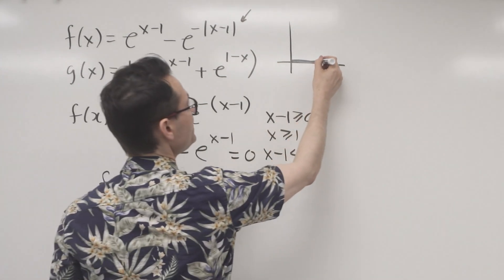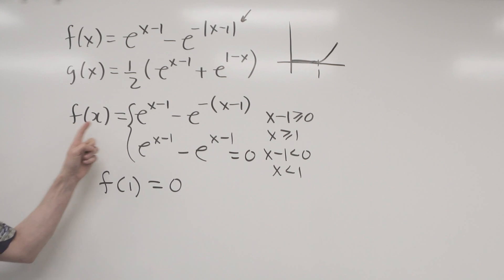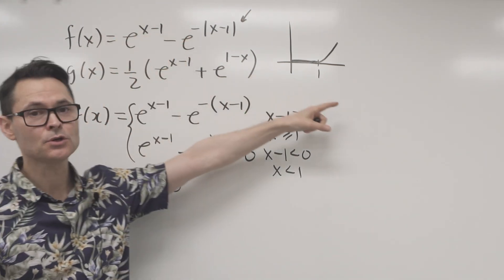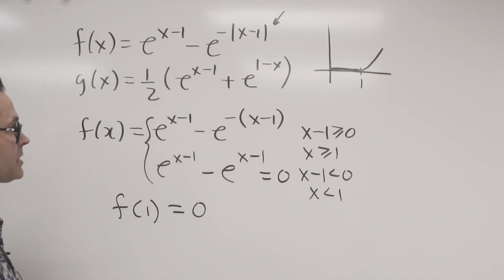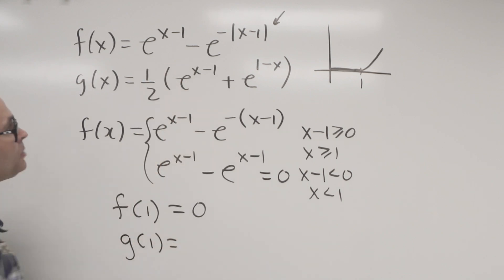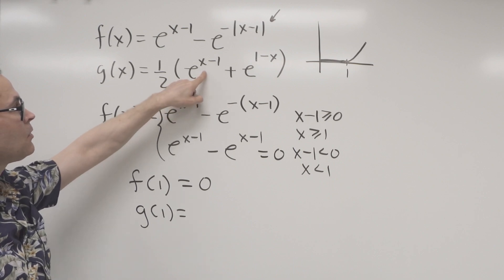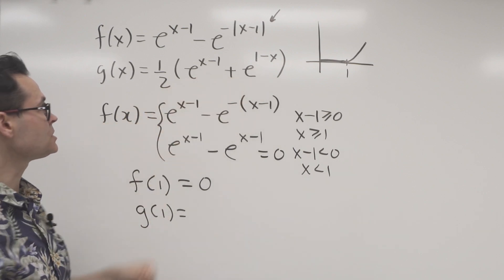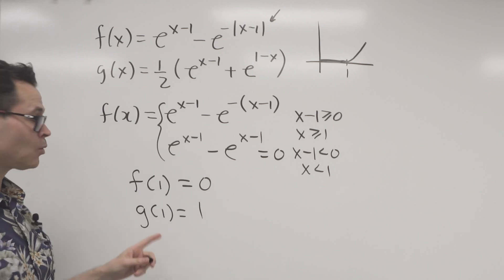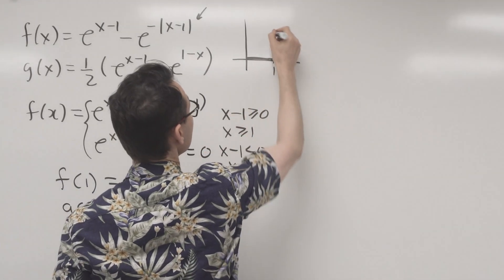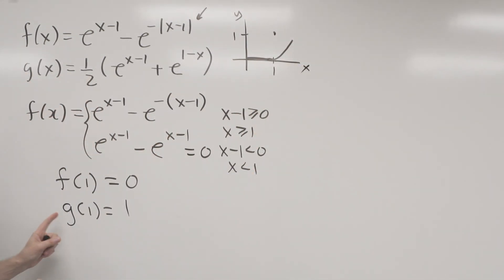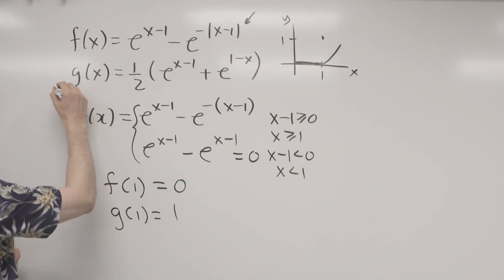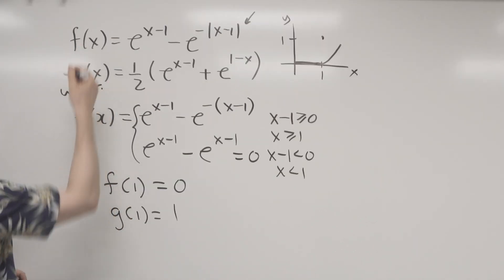Beyond x = 1, it's going to be an increasing function because f is an increasing growth function after 1. Now I'm curious to know what g(x) is at 1. So g(1) — when I plug 1 in, that's going to give me e^0 plus e^0, which is 2. So g at 1 is 2, meaning g is up here — it's the upper function at 1. It looks as though g is my upper function and f is my lower.